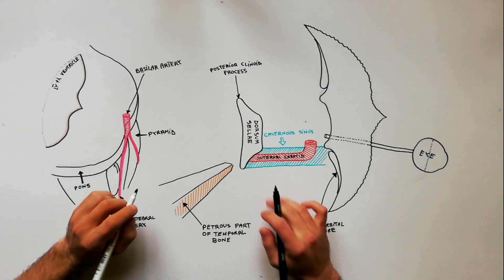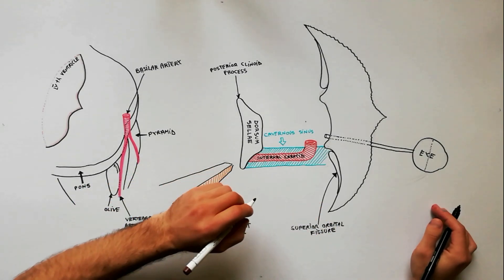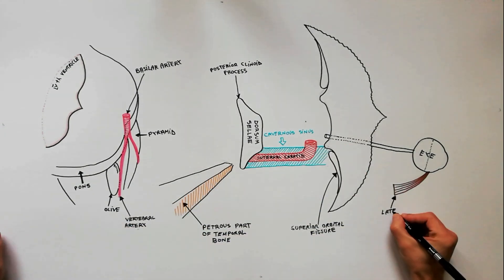Abducens nerve is the sixth cranial nerve. It is purely motor and supplies only one muscle, the lateral rectus of the eyeball.